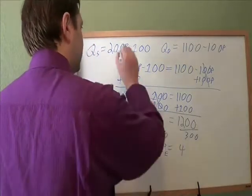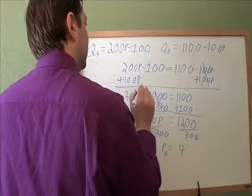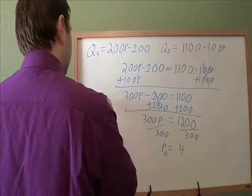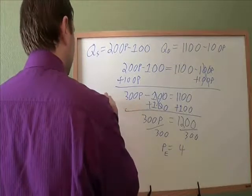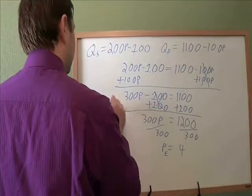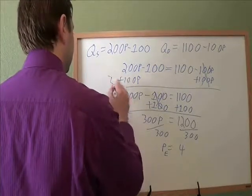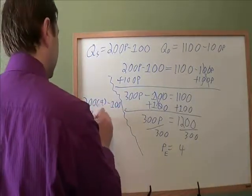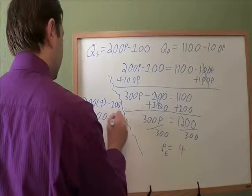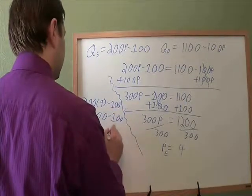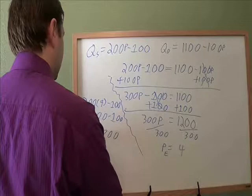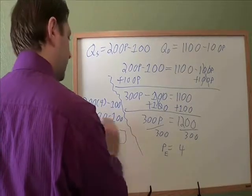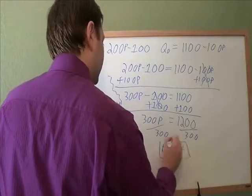To find the equilibrium quantity, we'll plug this into either of these two formulas. Let's do quantity supplied this time. So 200 times the price, which is $4, minus 100. Well, 200 times 4 is 800. And 800 minus 100 is 700. And that's our equilibrium. Same thing we got from the table. But that's how you do it using the algebra.